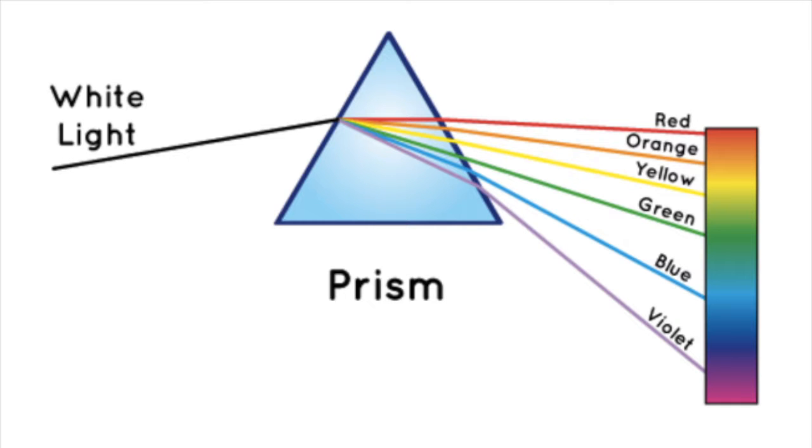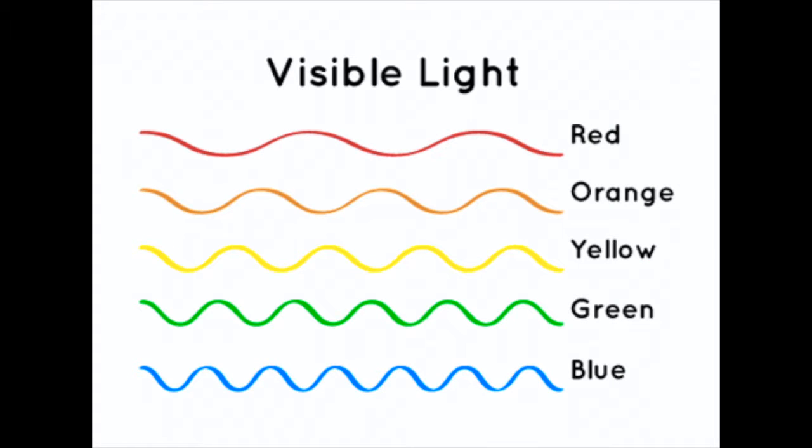White light or sunlight is made up of all the colours of the rainbow. As you can see in the diagram, blue light waves are shorter than red light waves. Due to this, blue light waves hit more particles in the atmosphere along the way.